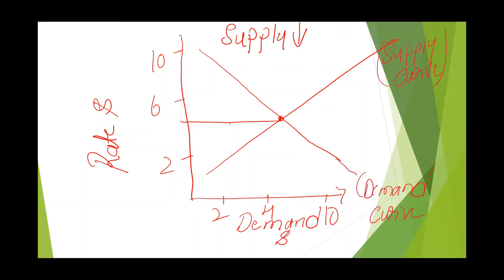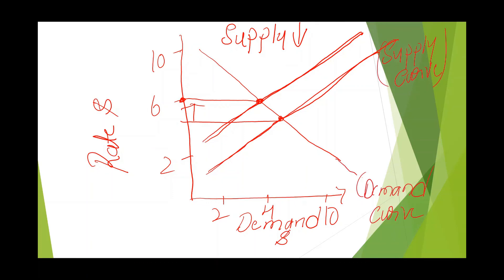Now we will understand what will happen if supply decreases. Whenever there is a decrease in supply, a new supply curve will appear above the original supply curve. The new equilibrium point corresponds to a higher price — that means the price has increased. As per the law of supply, when price increases, supply also increases, so the supply will move from the new point back to the original equilibrium. This is how equilibrium is achieved again whenever there is a decrease in supply.